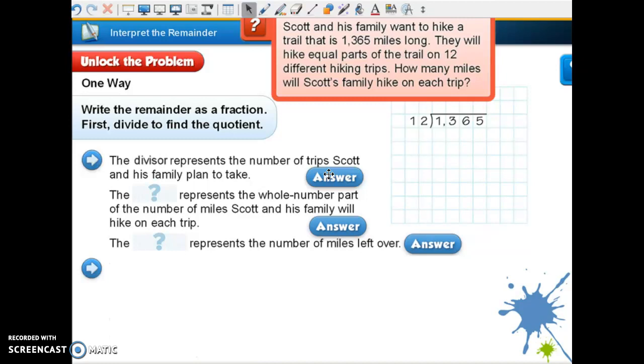It tells us right here that he's going to take 12 trips, and that is our divisor. The blank represents the whole number part of the number of miles Scott and his family will hike on each trip. So it breaks it down into those 12 trips, which is going to be our quotient. And the blank represents the number of miles left over. So that would be the remainder.